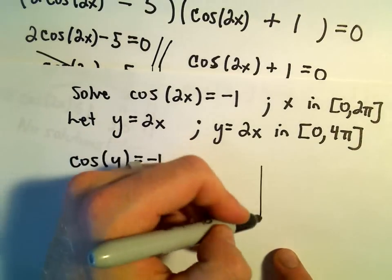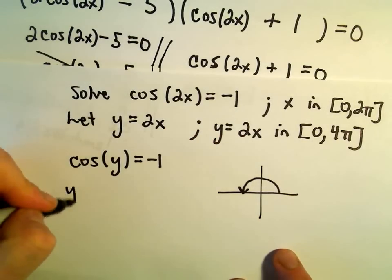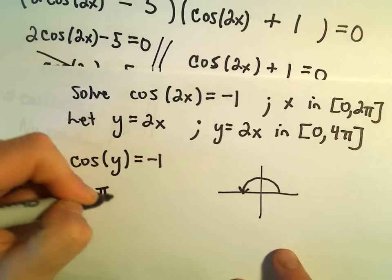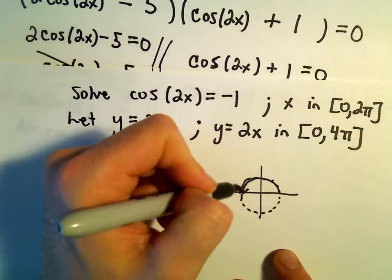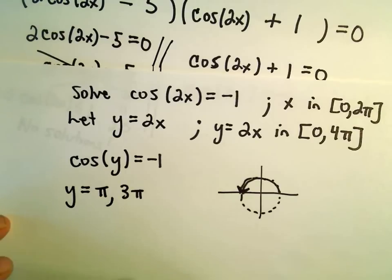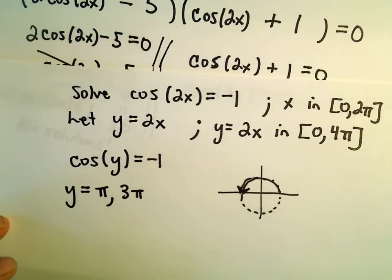Well, let's see. In terms of the unit circle, cosine of pi equals negative 1. So y equals pi would be a solution. And then the next solution we would get would be at 3 pi. And that would be all the solutions in the interval from 0 to 4 pi.